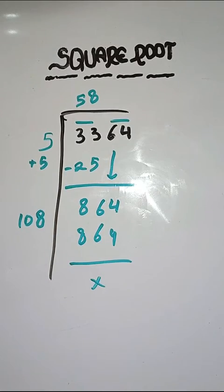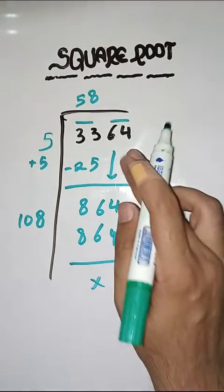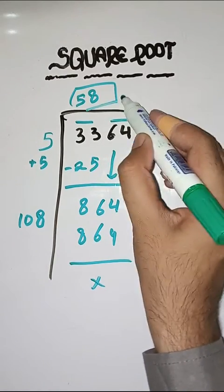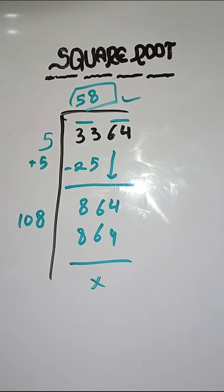So यह completely solve हो चुका है. So square root of 3364 is 58. Hopefully आपको समझ आ गया होगा. If you have any doubt, you can ask in comment section. Thank you.